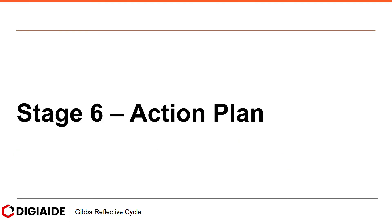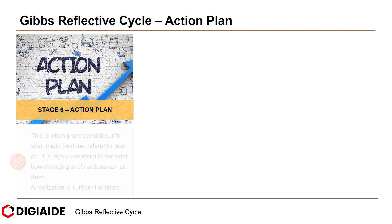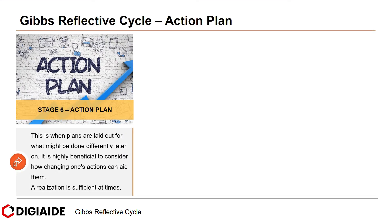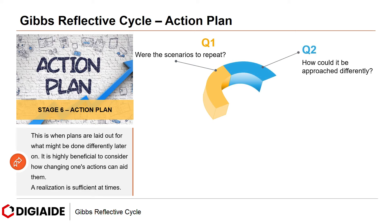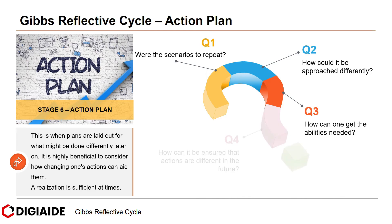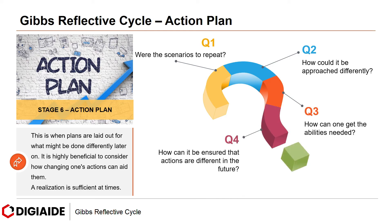The final stage is the Action Plan. This is when plans are laid out for what might be done differently later on. It is highly beneficial to consider how changing one's action can aid them. A realization is sufficient at times. The questions in this final stage: first, were the scenarios to repeat? Second, how could it be approached differently? Third, how can one get the abilities needed? And finally, how can it be assured that actions are different in the future?